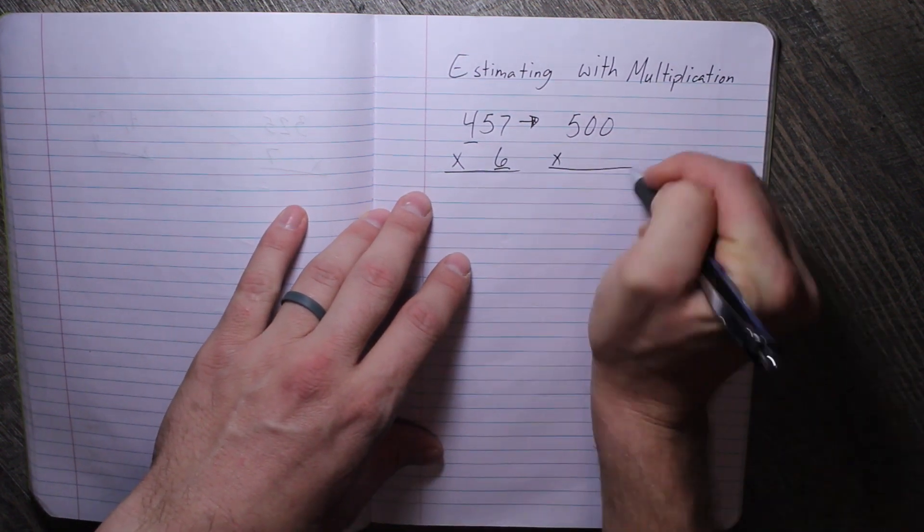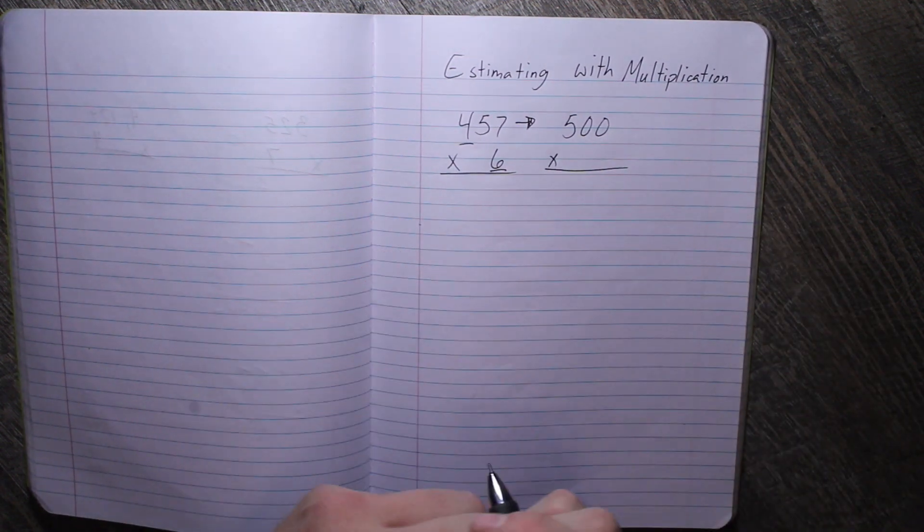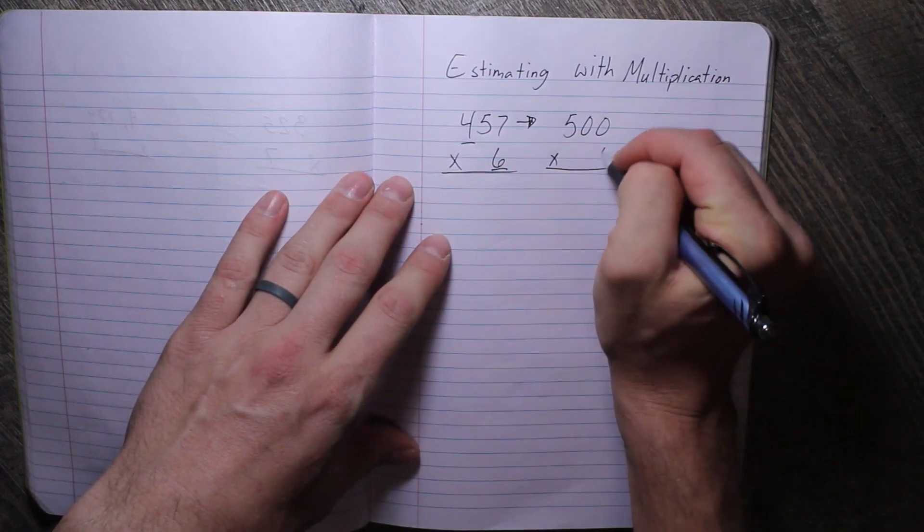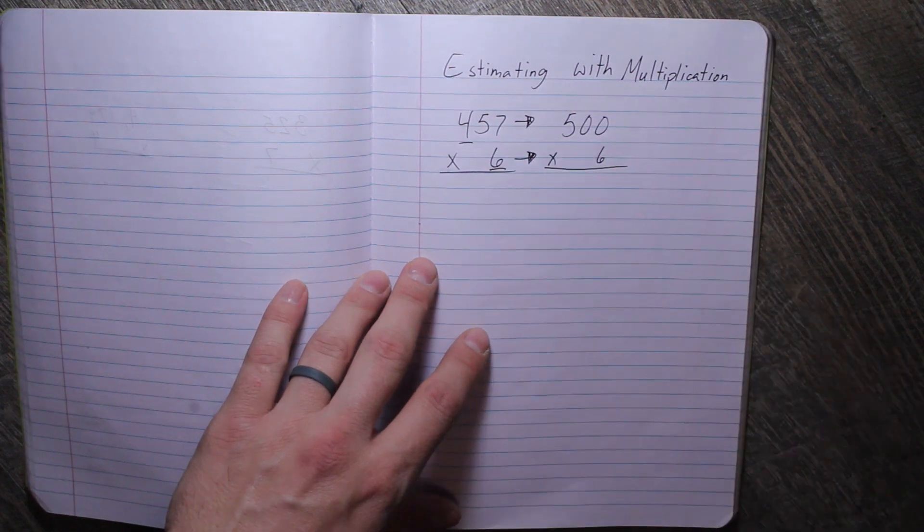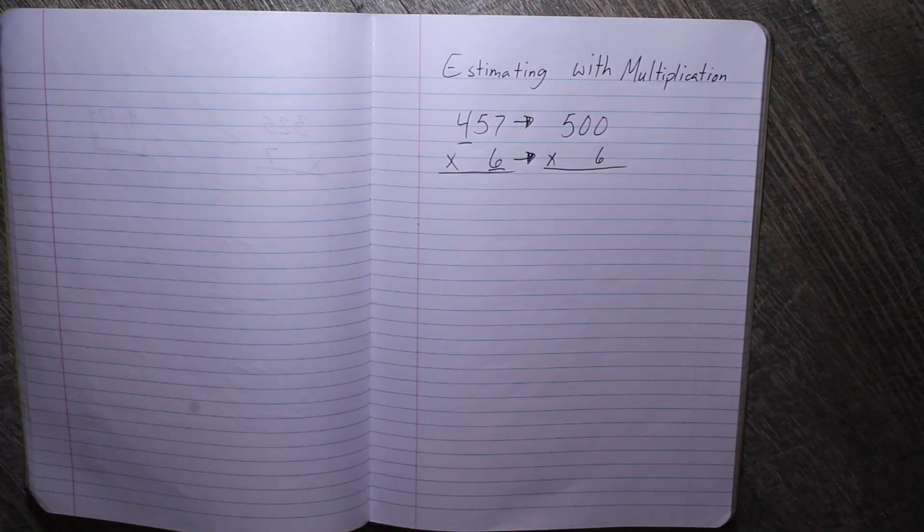And 6. Well, we don't need to round that. That's a single digit. So we're not going to round that one. So now we just have 500 times 6 instead of 457 times 6.